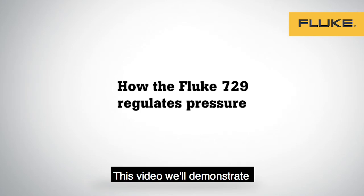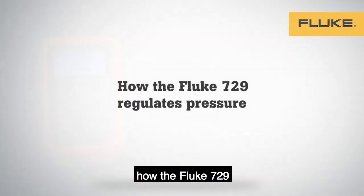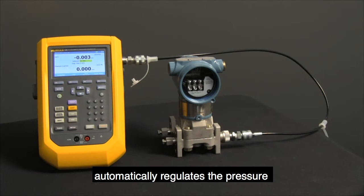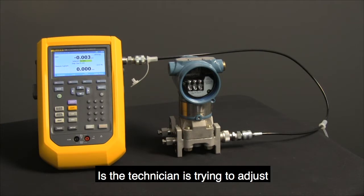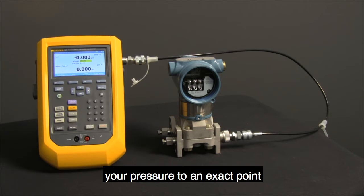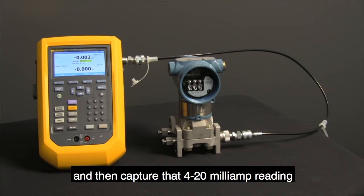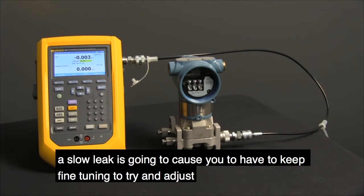This video will demonstrate how the Fluke 729 automatically regulates pressure even during a slow pressure leak. One of the main difficulties you'll see in the field as a technician is trying to adjust your pressure to an exact point and then capture that 4-20 milliamp reading. A slow leak will cause you to keep fine-tuning to adjust.